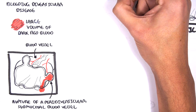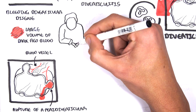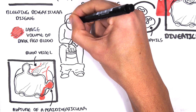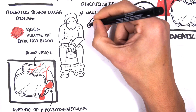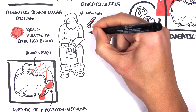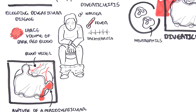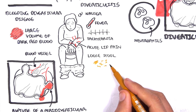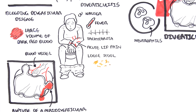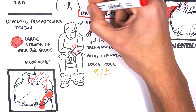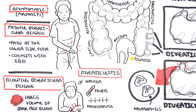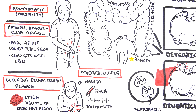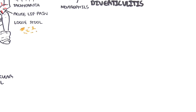The fourth presentation is diverticulitis — inflammation of a diverticulum — which presents with nausea, fever, tachycardia, acute left iliac fossa pain in western countries, and loose stools. To summarize, the four presentations are: the majority being asymptomatic, painful diverticular disease, bleeding diverticular disease, and diverticulitis.